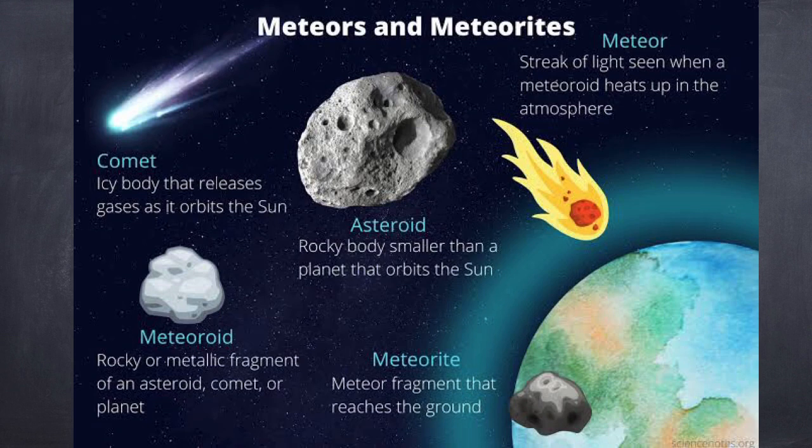Meteorites are large rocky masses that do not burn up completely when they penetrate the atmosphere of the Earth, and the remaining part of them without burning falls on the Earth's surface.